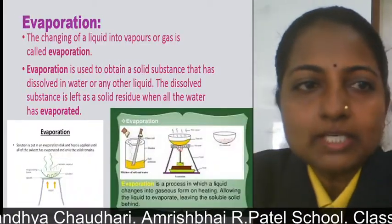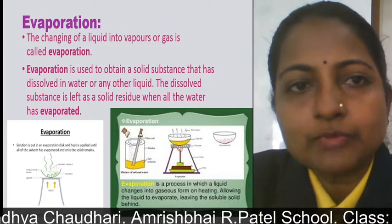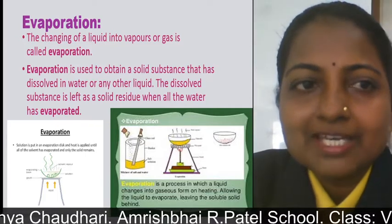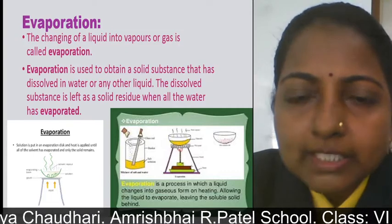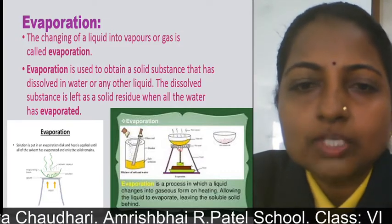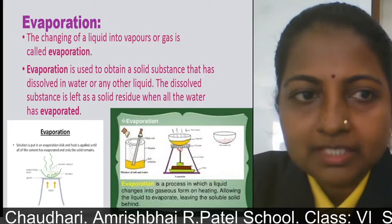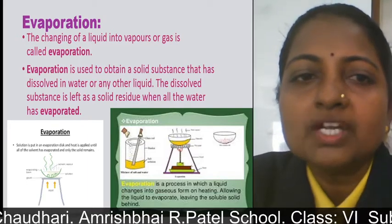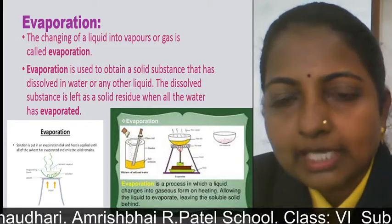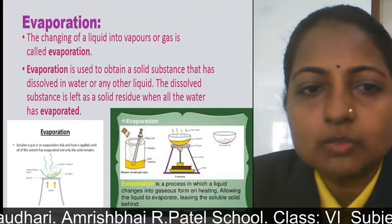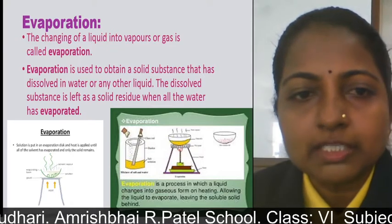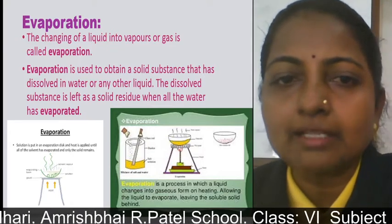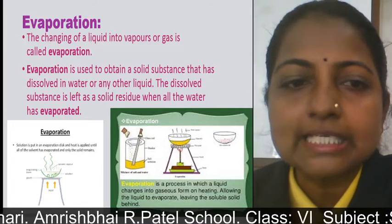Now we will see what is evaporation. The changing of a liquid into vapour or gas is called evaporation. Evaporation is used to obtain a solid substance that has dissolved in water or in another liquid. The dissolved substance is left as a solid residue when all the water has evaporated. You can see it in the figure also. Here evaporation takes place, the vapours are going up, and the vapours are light.